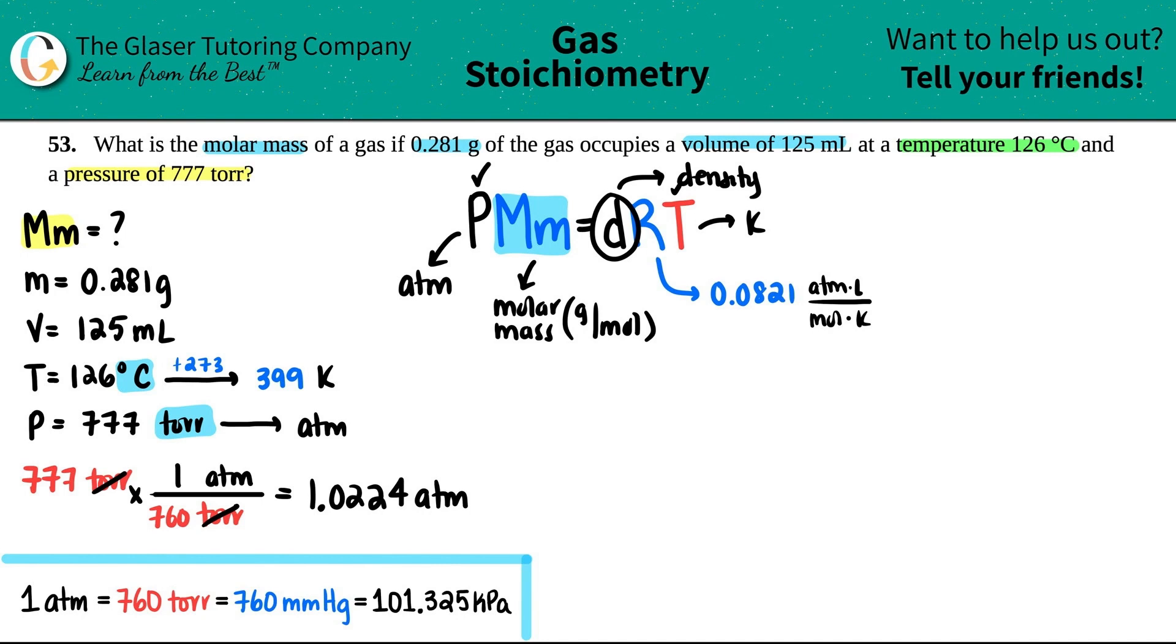Now we just need to figure out what the density is. Well, remember, a density is just a mass divided by a volume. Now, in this case, the units for density is gram because the G is locked in with the molar mass and the volume is going to be liters because that's locked in into the R value. So it has to be in units of G divided by L. So let's see. Can we find a density from what we had? Oh, well, we have a G.